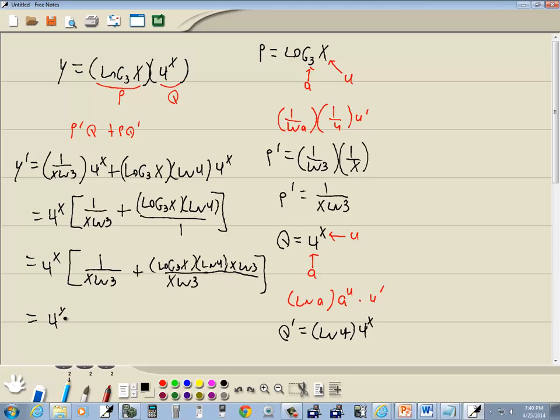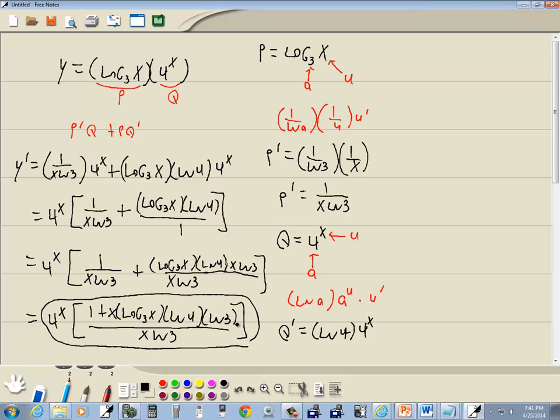So then we're gonna have 4 to the x times, and these we can merge together now, so we got 1 plus log base 3 of x natural log of 4, and I'm gonna put that x out in front, and then natural log of 3, all over x natural log of 3. And that's our answer. Not a whole lot of simplifying you can do beyond that.